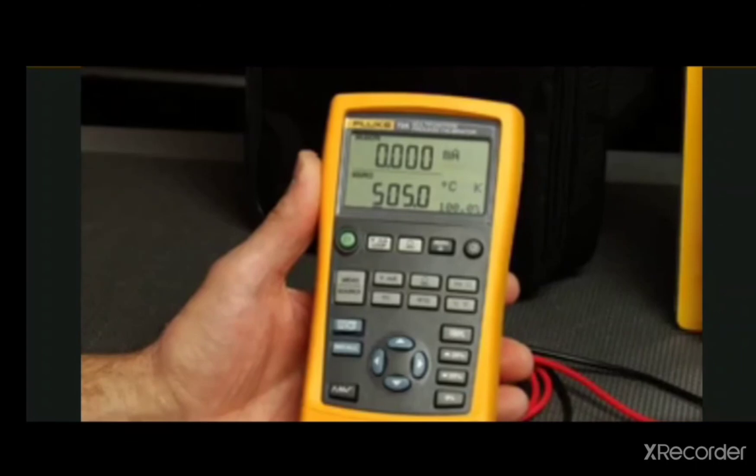The 725 is now ready to test the transmitter, and you can use the 25% step buttons to change the output and test for measured milliamp linearity.